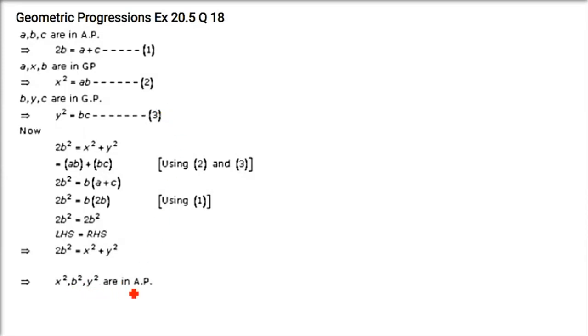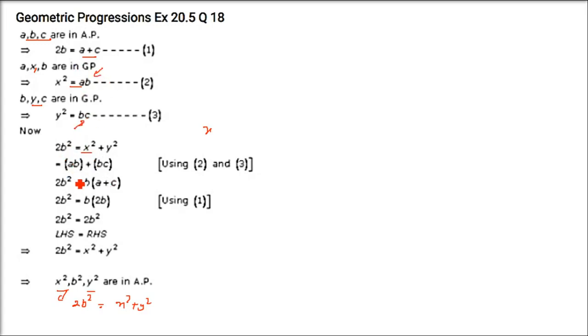If A, B, C are in AP and A, X, B and B, Y, C are in GP, show that X², B², Y² are in AP. From GP: X² = AB and Y² = BC. We need to show 2B² = X² + Y², i.e., 2B² = AB + BC = B(A + C). Since A, B, C are in AP, A + C = 2B. So B·2B = 2B². Left-hand side equals right-hand side, confirming X², B², Y² are in AP.